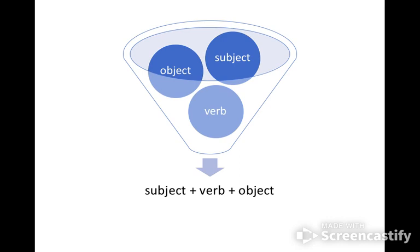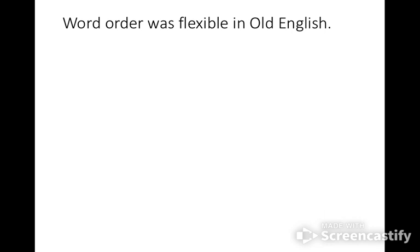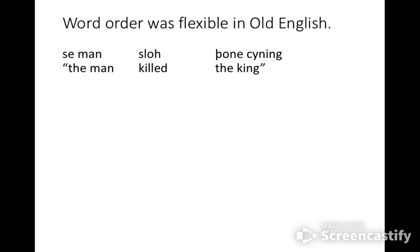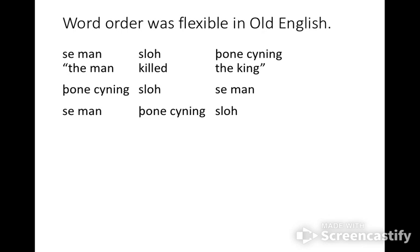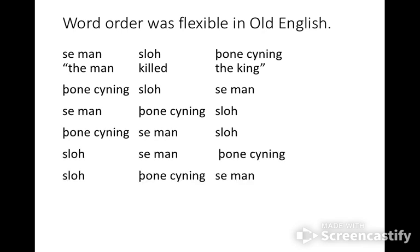So how did this change happen? How did word order become more rigid, more fixed, and what does that tell us? Let's illustrate this with an example. In Old English, you could say 'Semann sloch Thöne kuning,' or 'Thöne kuning sloch Semann,' or 'Semann Thöne kuning sloch,' or the other three possible permutations. Some of these did occur more frequently than others, but all six were possible orders.